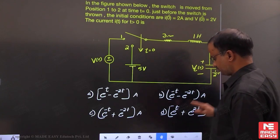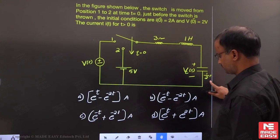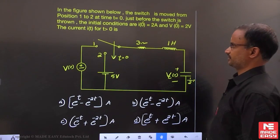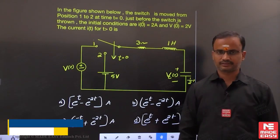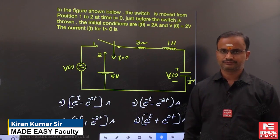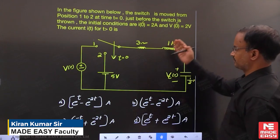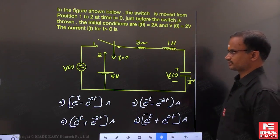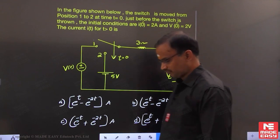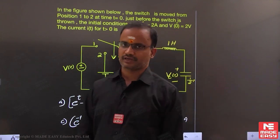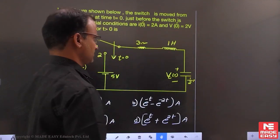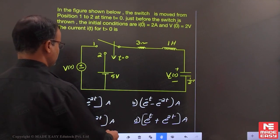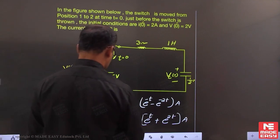In this example, the initial value for the inductor and capacitor is given in the data itself. The requirement is the current response corresponding to t greater than 0 seconds.